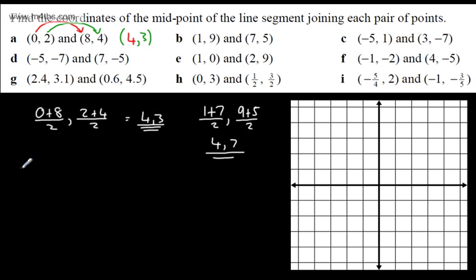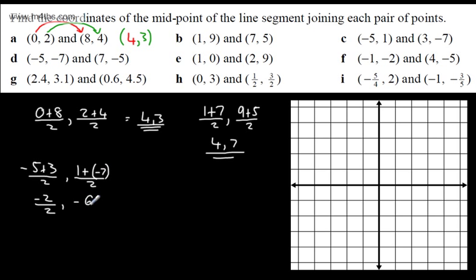For the next one with negative 5 and 3: negative 5 plus 3 divided by 2 gives negative 2 divided by 2, which is negative 1. For the y-coordinates: 1 plus negative 7 gives negative 6 divided by 2, which is negative 3. So the midpoint is (-1, -3). Alternatively, from negative 5 to 3 you've added 8, so add half (4), giving negative 1; from 1 to negative 7 you've subtracted 8, so subtract 4, giving negative 3.